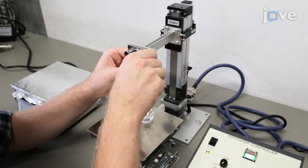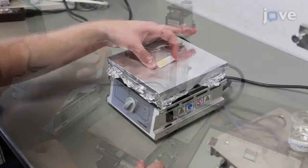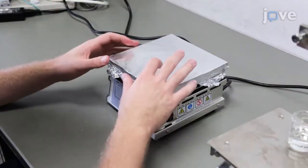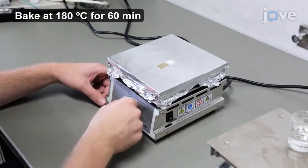Next, remove the device from the dip coater. Place it on a hot plate at 180 degrees Celsius to bake for 60 minutes.